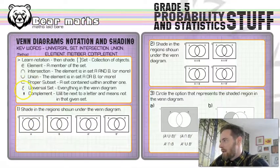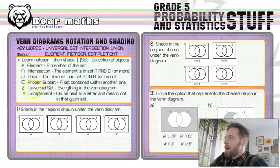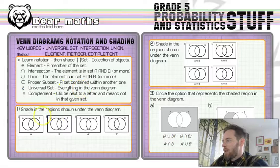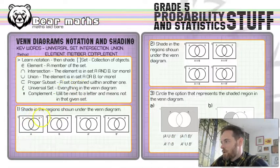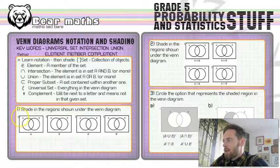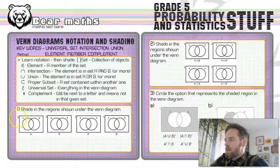And then this little squiggly E-looking one, that's the universal set. That means everything that's inside the Venn diagram, the Venn diagram is including this rectangle. It's not just the two circles. So, the outside of it, you'll see the little squiggly symbol. That just means everything that's inside it, meaning the universal set.